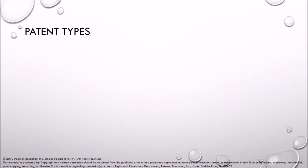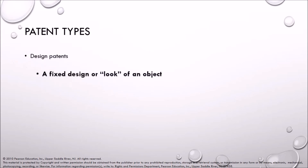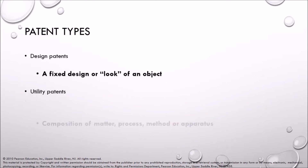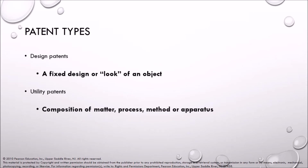Patent types. Design patents cover a fixed design or look of an object. Utility patents cover composition of matter, process, method, or apparatus. Plant patents cover new plant varieties.